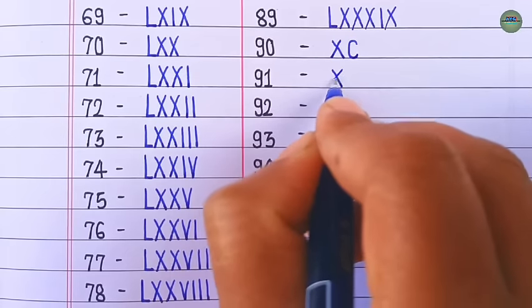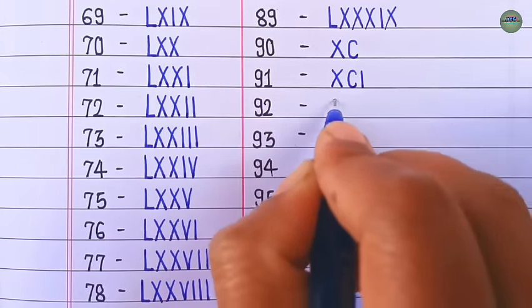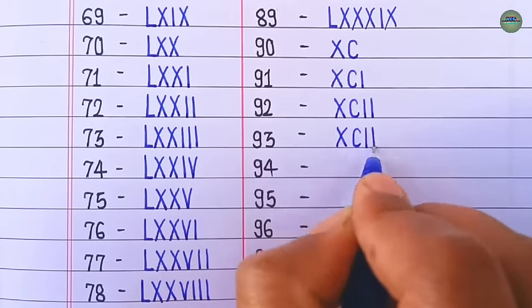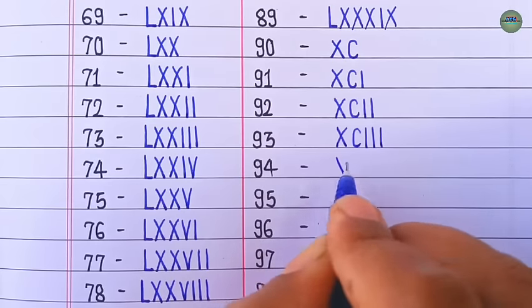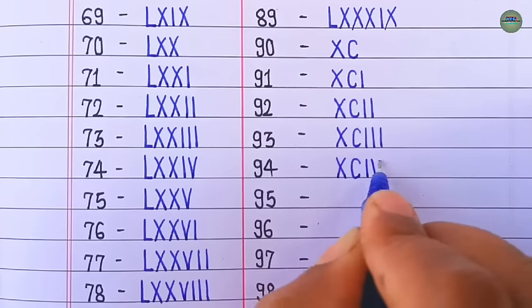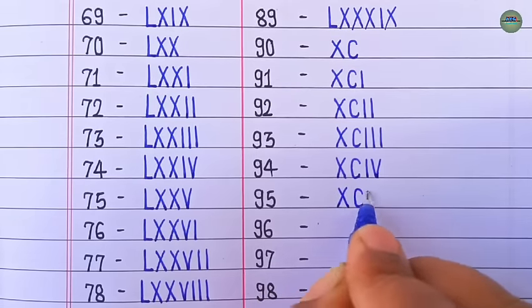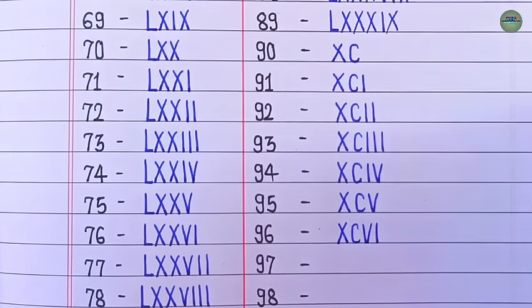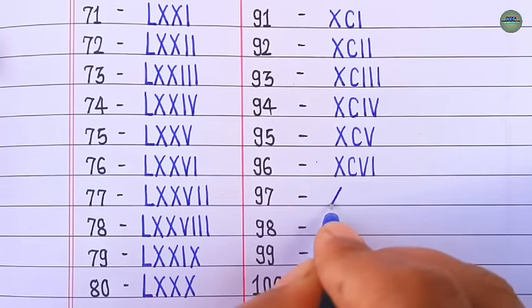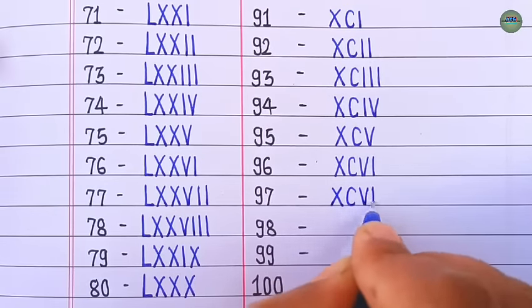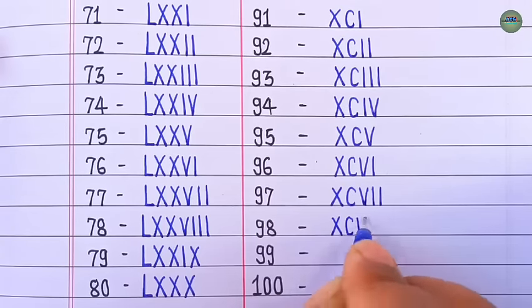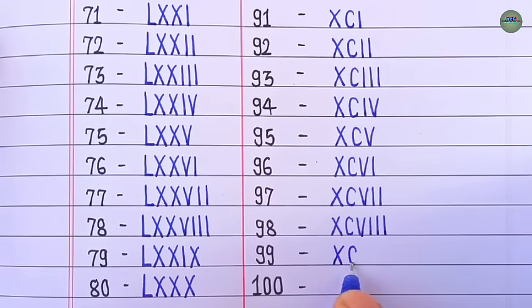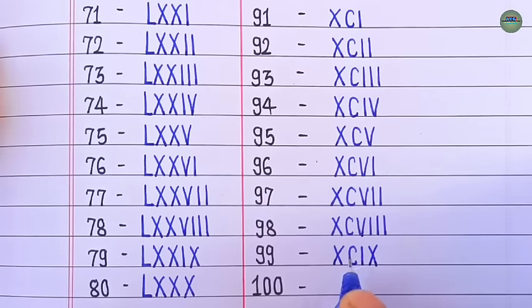90 is XC, 91 is XCI, 92 is XCII, 93 is XCIII, 94 is XCIV, 95 is XCV, 96 is XCVI, 97 is XCVII, 98 is XCVIII, 99 is XCIX, 100 is C.